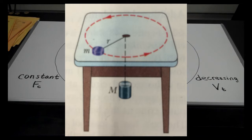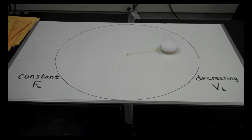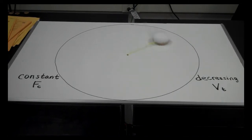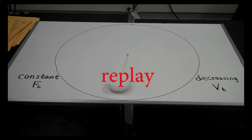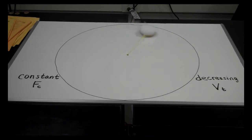I spin the puck around the table with my hand. Even though the surface is very slippery for the dry ice puck, there is a small amount of friction, so eventually the puck begins to slow down. As the puck slows down, you'll notice the radius of the circle becomes smaller.